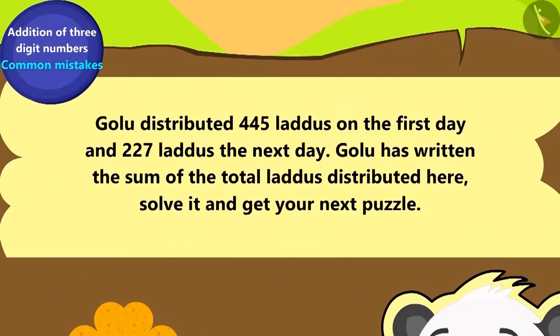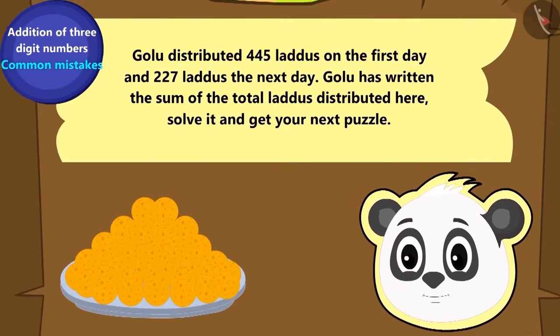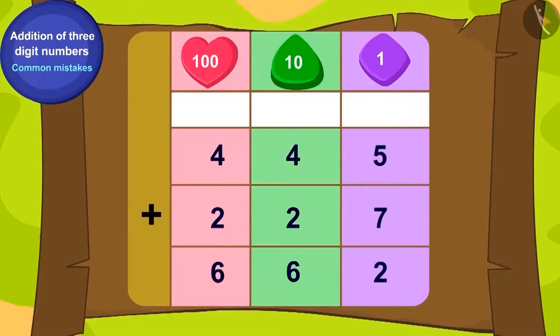Galu distributed 445 laddus to his friends on the first day and 227 laddus the next day. Galu has written the sum of the total laddus distributed here. Solve it and get your next puzzle. Is this addition correct?